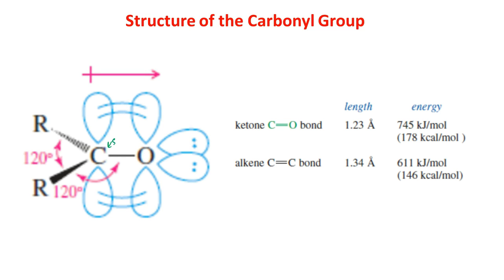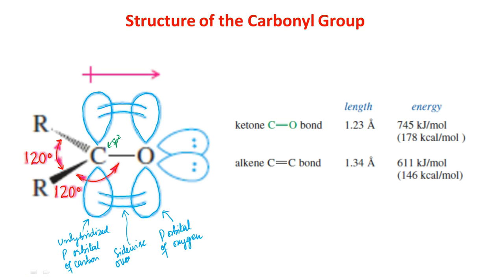The carbonyl carbon atom is sp2 hybridized and bonded to three other atoms through coplanar sigma bonds oriented about 120 degrees apart. The unhybridized p orbital overlaps with a p orbital of oxygen to form a pi bond.